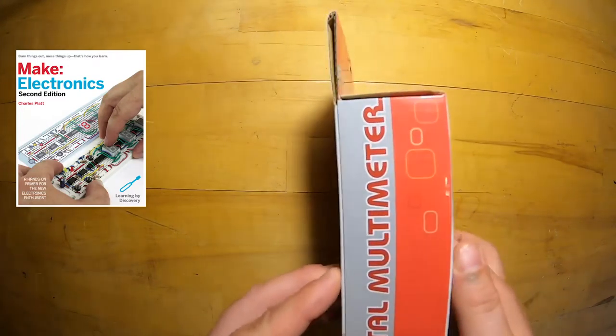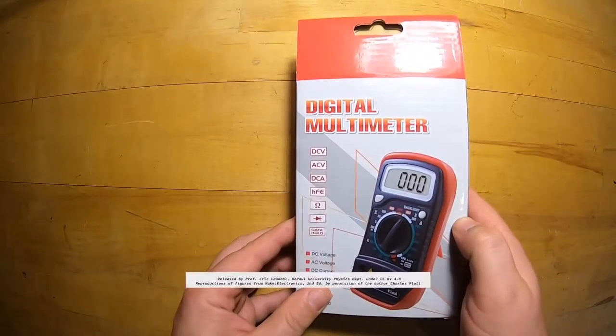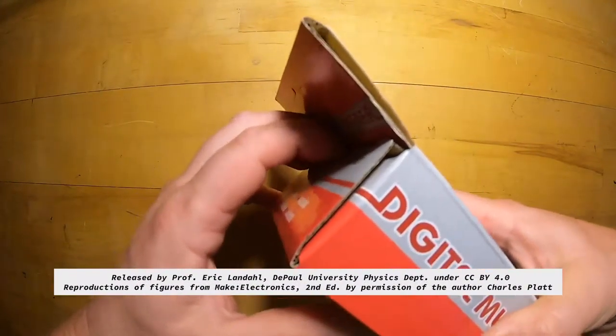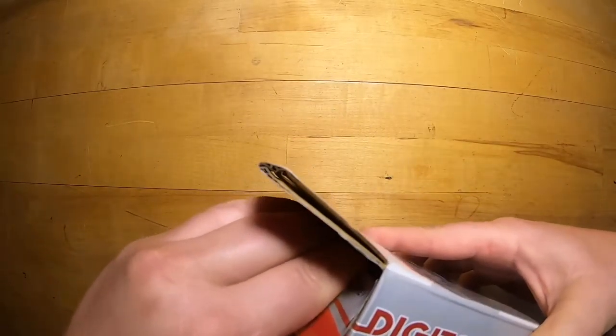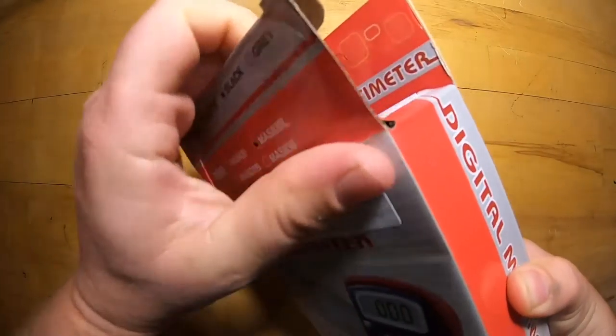In this video we're going to be unboxing some of the materials for basic electronics from Cheney Electronics. A lot of the figures that have been used are taken with permission from the author of Make Electronics, Charles Platt.